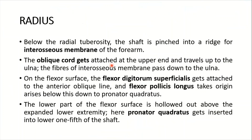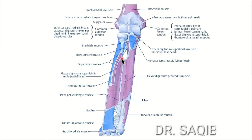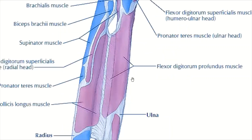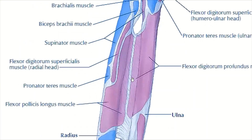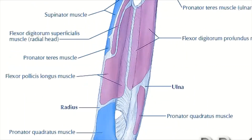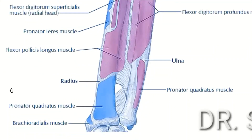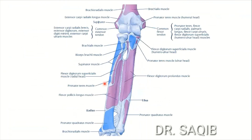The lower part of the flexor surface is hollowed out above the expanded lower extremity, where pronator quadratus gets inserted into the lower end and one-fifth of the shaft. Here you can see the pronator quadratus muscle.